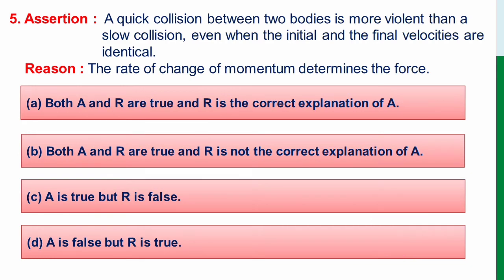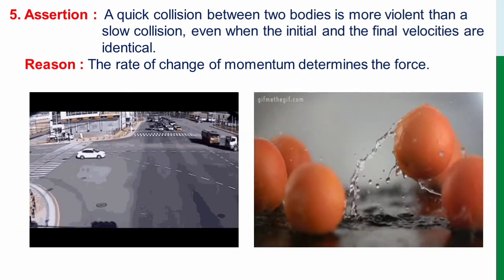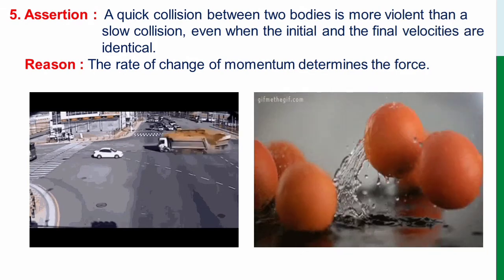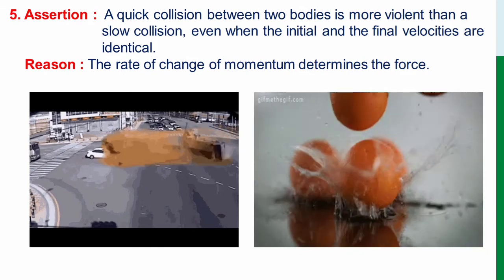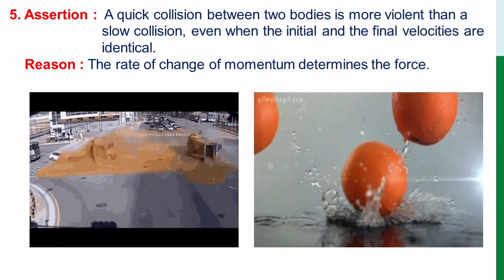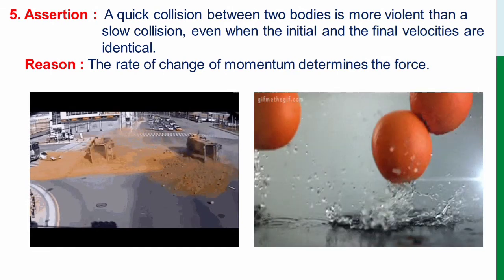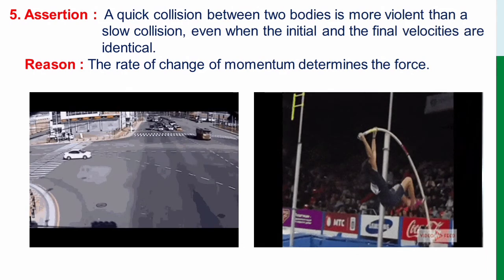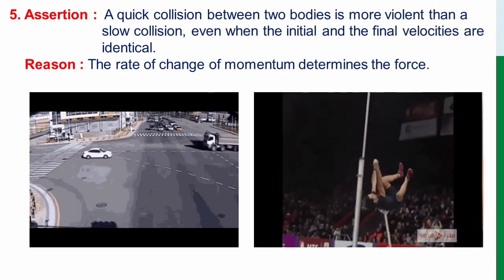Now we know that when objects are moving with high speed, their momentum will be very high. And hence the impact that they give on the colliding object will be also very high. So a quick collision between bodies will be more violent than a slow collision.